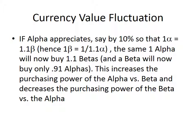Now let's look at how currencies fluctuate. Let's say the alpha appreciates in value by 10% — so instead of one alpha buying one beta, one alpha now buys 1.1 betas. Remember it's an inverse relationship: if alpha is more valuable versus beta, then betas are less valuable versus alphas. So if one currency is appreciating versus another, the other is depreciating. If U.S. dollars are appreciating against the euro, the euro is depreciating against the dollar. So one alpha buys 1.1 betas, and one beta now buys only 0.91 alphas.